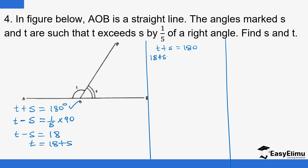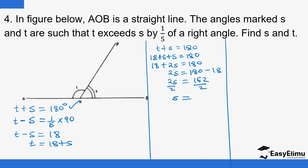So 18 plus 2S equals 180. Moving 18 to the other side: 2S equals 180 minus 18, so 2S equals 162. Dividing both sides by 2, S equals 81. From there we can find the value of T: T equals 18 plus S, which is 18 plus 81, giving us T equals 99. So S equals 81 degrees and T equals 99 degrees.